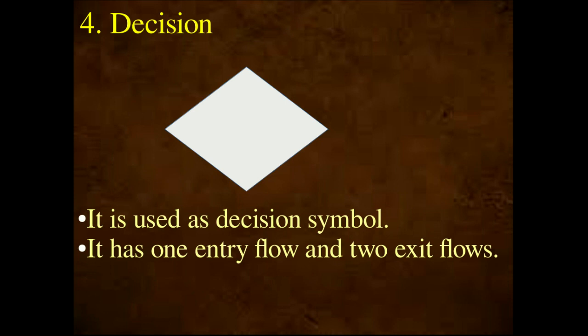The diamond shape is the decision symbol. This symbol is used for decision-making — you can choose a condition: true or false. It has one entry and two exits. It is used to take a decision — true or false — with one input and two outputs. This is the decision box.